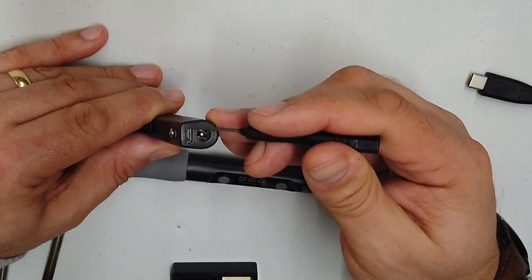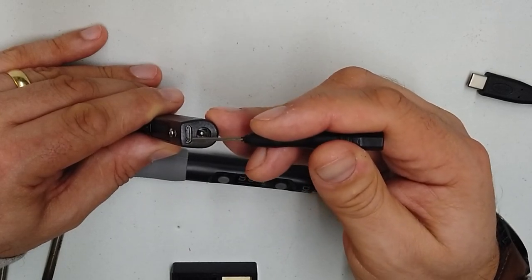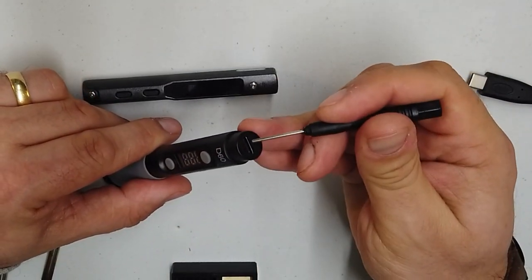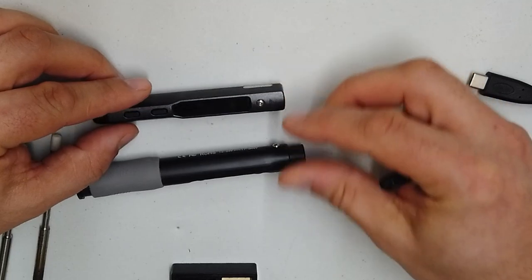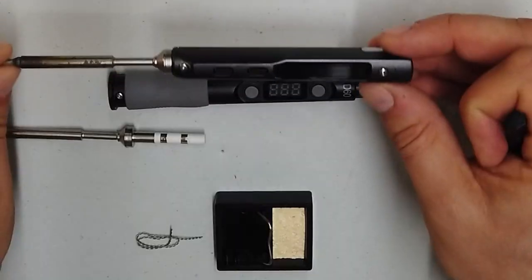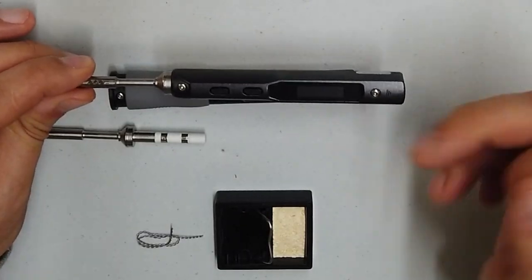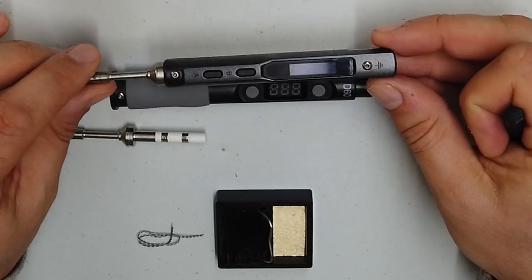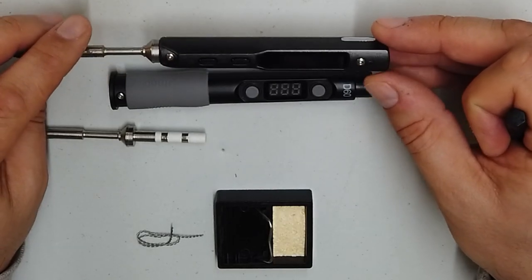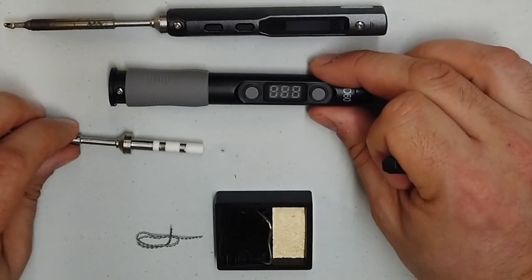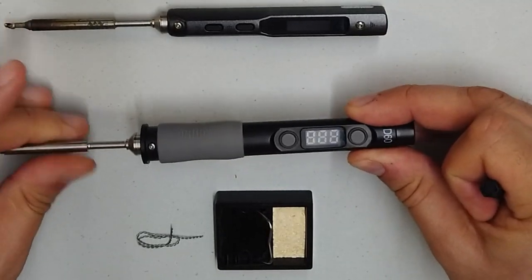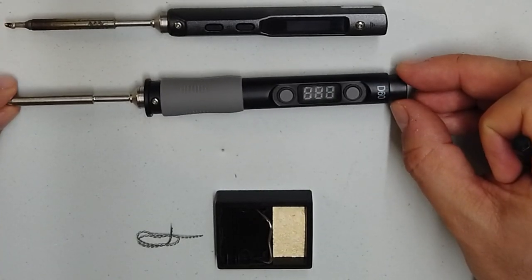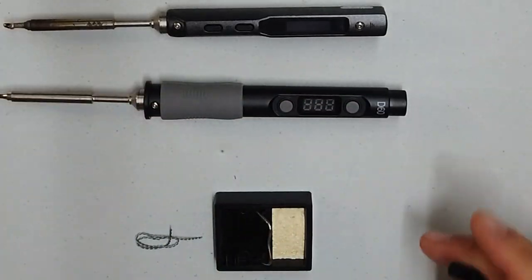This port here, this USB port, is a micro USB. And that's for updating firmware on that particular iron. This here is the USB-C port. The difference in price. So on Amazon, the TS-100 iron and element, the basic kit, is about £60. Whereas the Secure Iron and tip, the D60, is about £30. Half price.